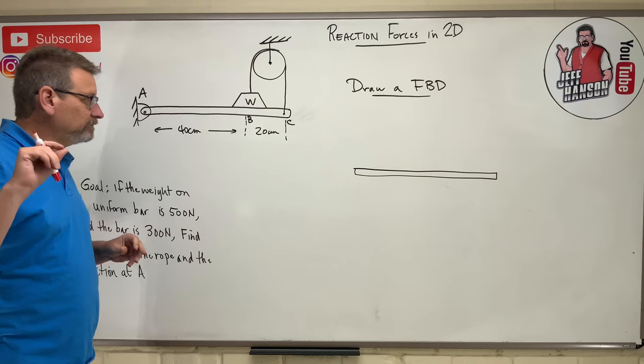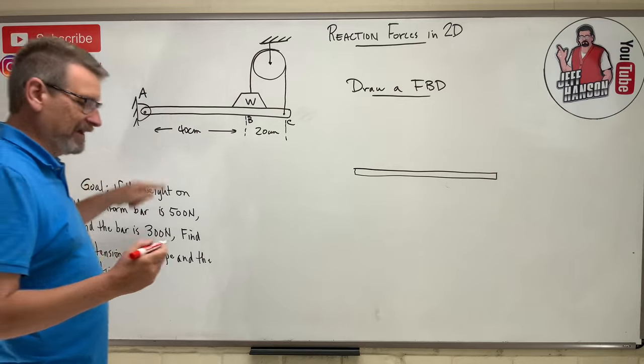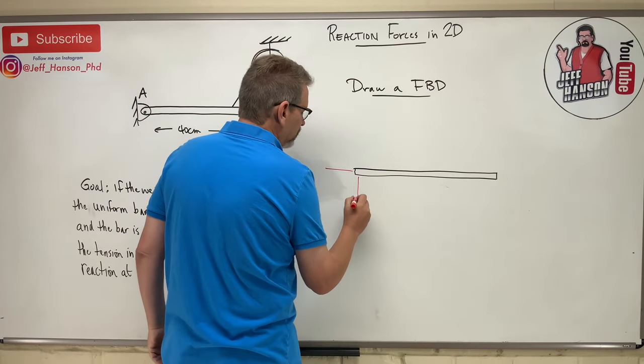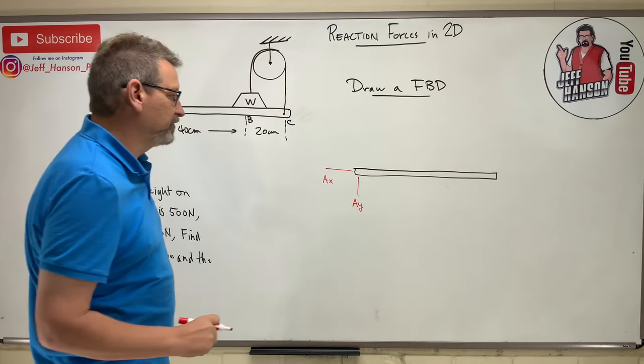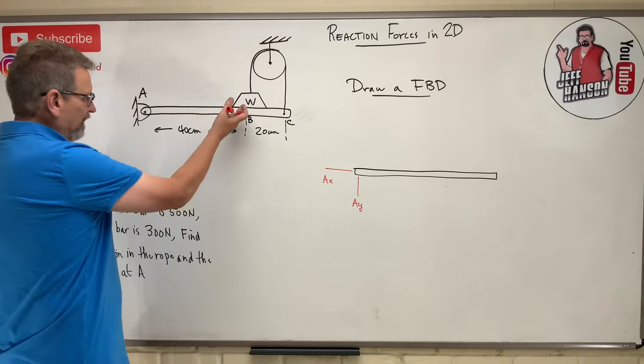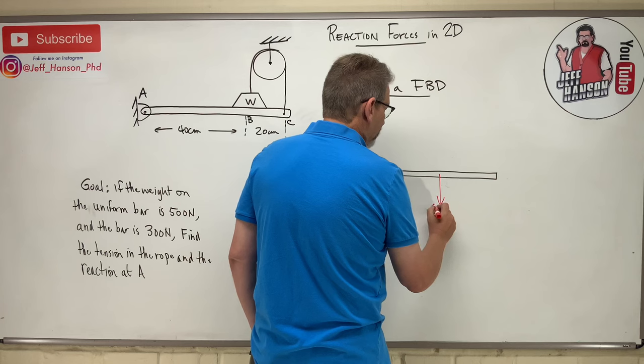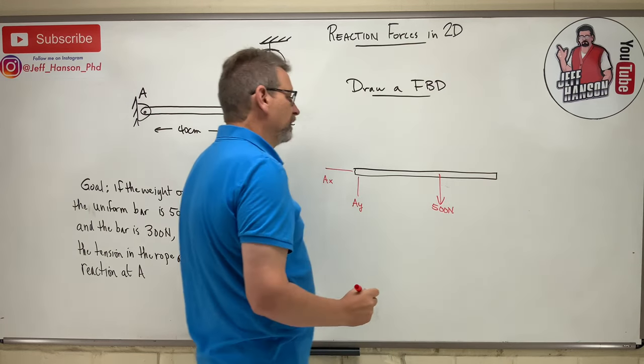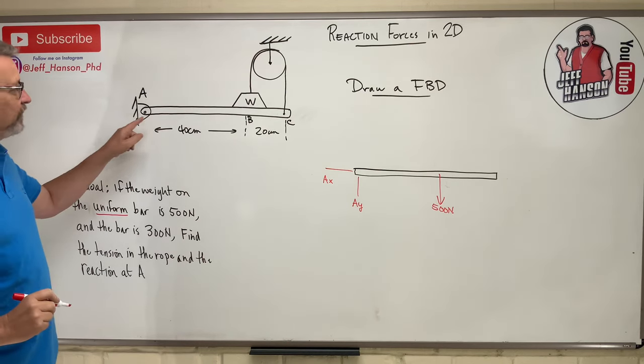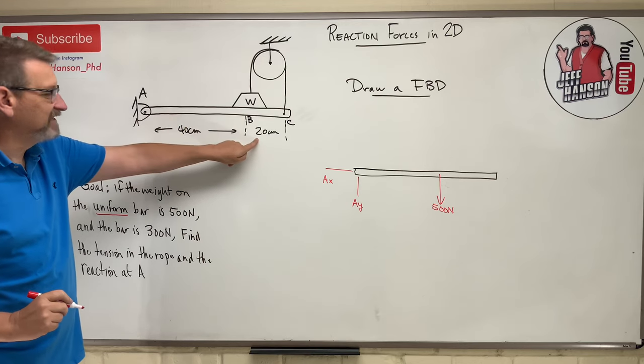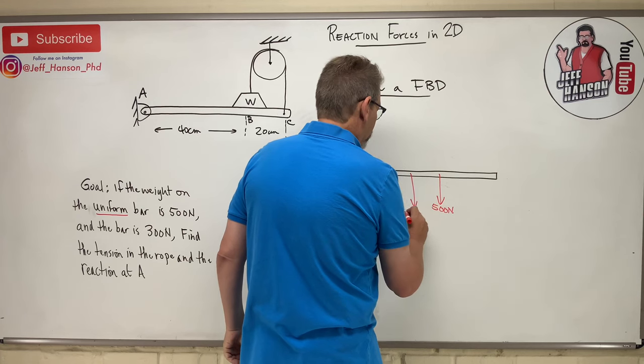Are you back? Here we go. Hope you got this right. Number one, over here at A I got a pin connection - Ay and Ax. I'll put those arrows on there in just a second. I got a weight on the bar - 500 Newtons. The bar itself has weight, and it's a uniform bar, right? You always see that word. Well that means that you need to put it right in the middle of the bar. The bar is 60 centimeters long, so we're going to put it at 30, right in the middle.